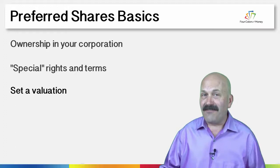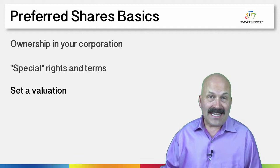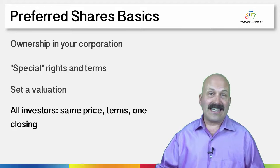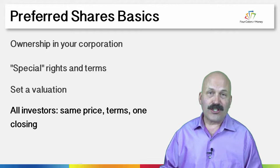The third thing is that preferred shares set a valuation for your company — there's a price per share — so investors know exactly how much of your company they own when they put their money in, and conversely, you also know how much of the company you still own. And finally, all the investors get the same price, the same terms, and you have a single closing on the same day, so everybody's entirely clear about what they're getting.